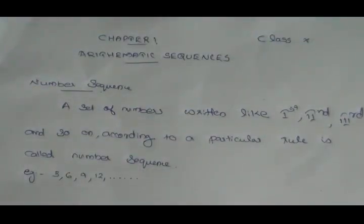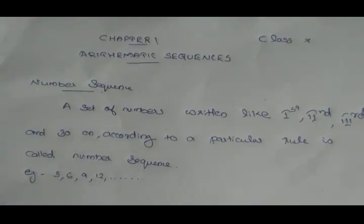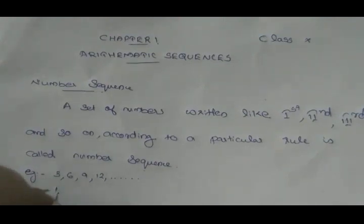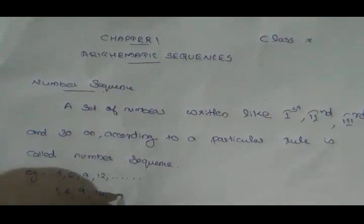Now let's take a look at natural numbers. Natural numbers are 1, 2, 3, 4, etc. Now let's take a look at powers: 1 squared is 1, 2 squared is 4, 3 squared is 9, 4 squared is 16, etc.